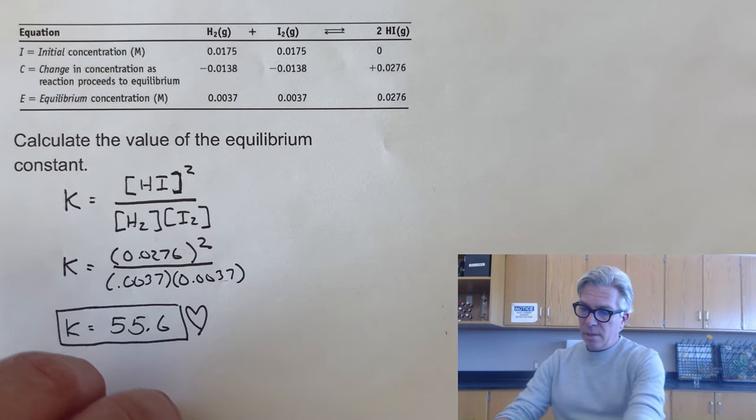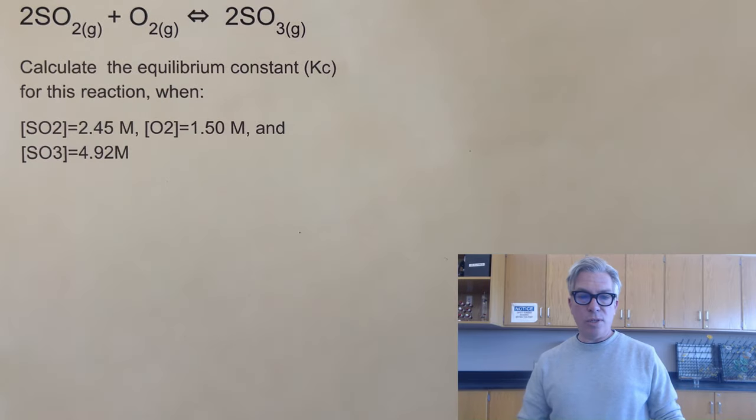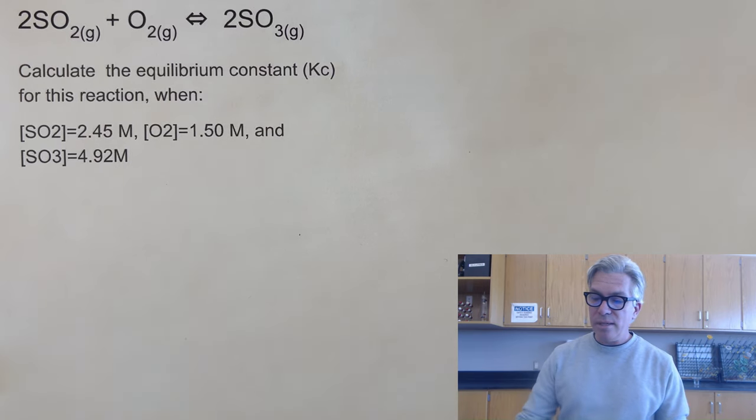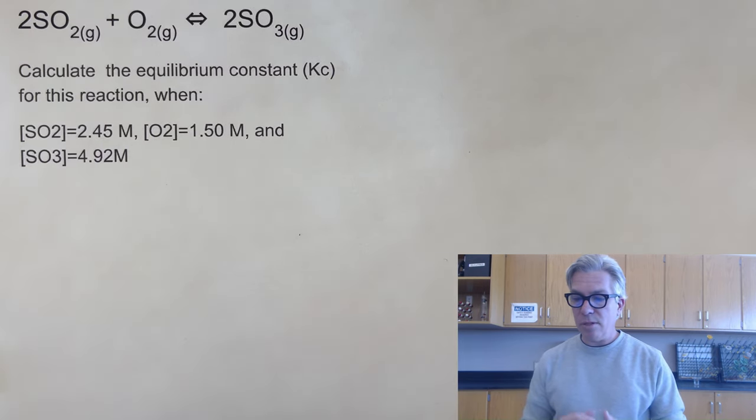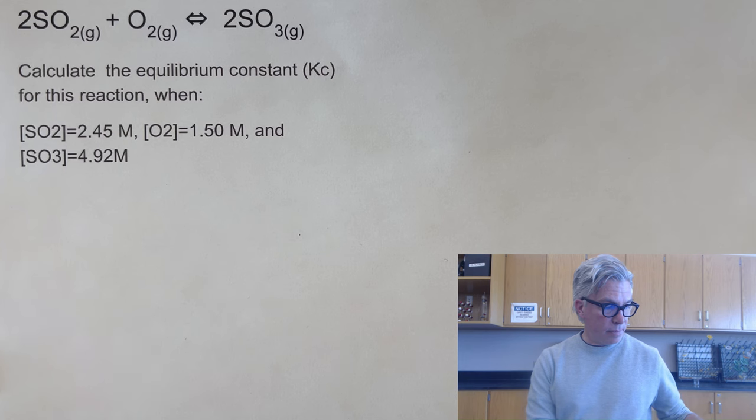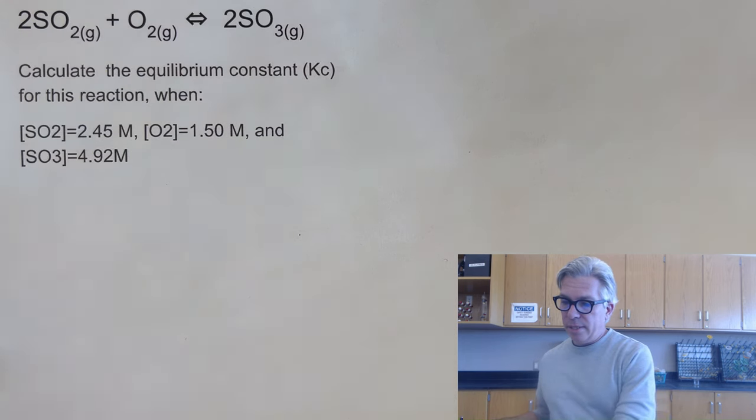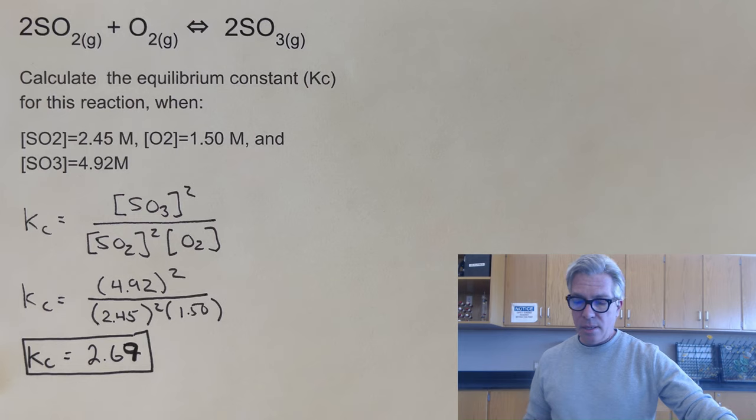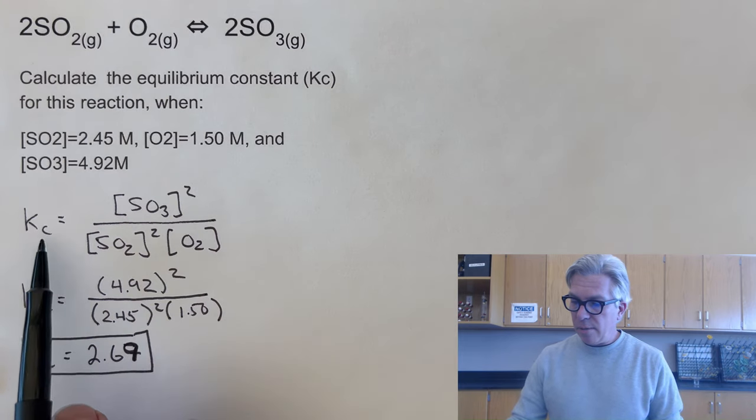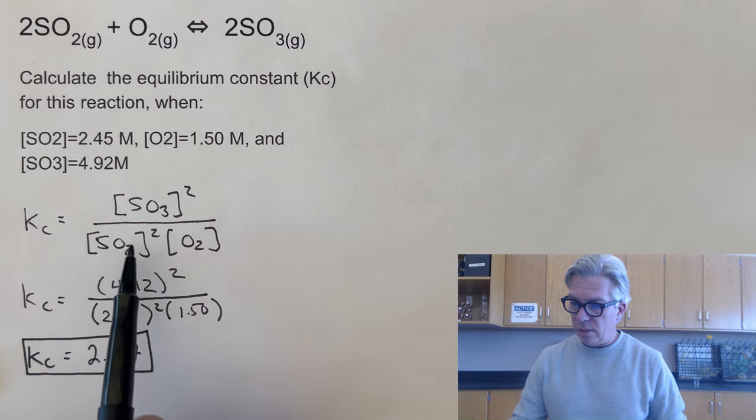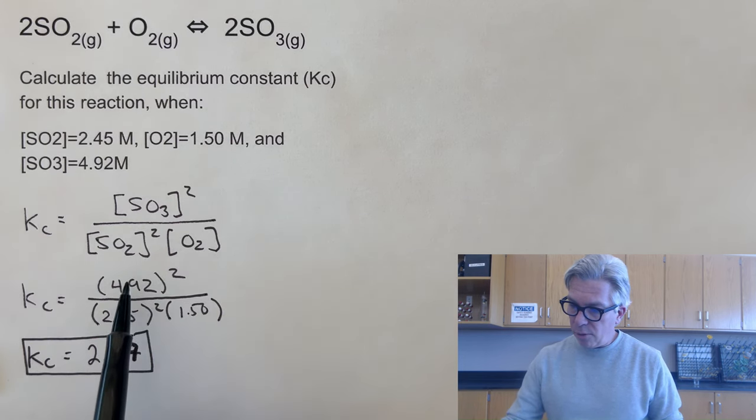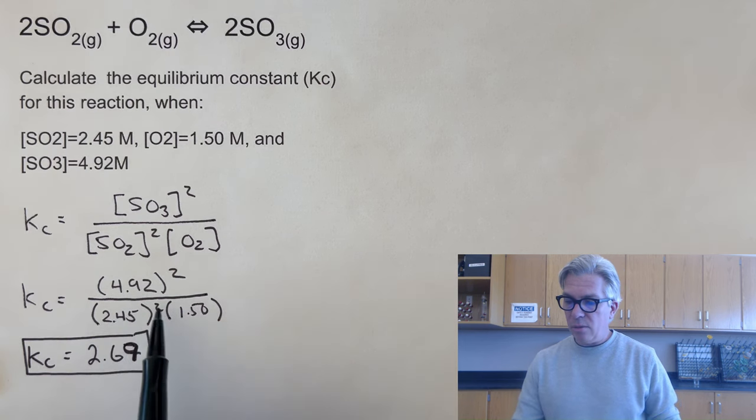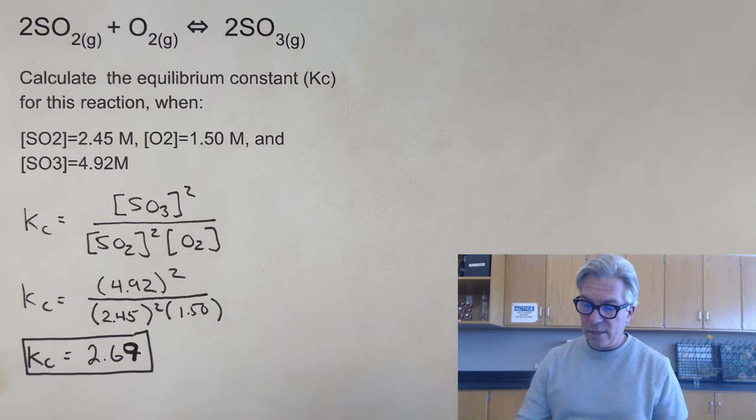So you try one. This is our second pause the video moment. Back for that other reaction we looked at, we already wrote the equilibrium constant expression, take a moment and plug in these values and find the equilibrium constant value. Please pause the video and come back in just a second. If you were able to do it and come up with a value of 2.69 is what I got. Here's my original equilibrium constant expression, SO3 squared over SO2 and O2. And I plugged in the 4.92 squared it, the 2.45 squared it, and the 1.5 worked out the math with the calculator and I got 2.69.